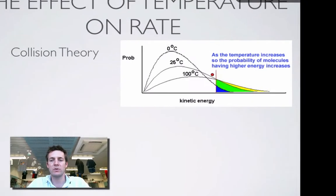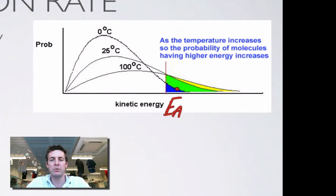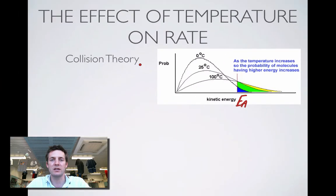Let's look at one of these energy distribution diagrams to try and help us explain this. As the temperature of a sample increases, the proportion of particles with greater than a certain amount of energy — so let's say this is the activation energy — increases as the temperature increases, and so a greater proportion of collisions will lead to reactions. So collision theory tells us that the rate of all reactions will increase as the temperature increases, and the rate of all chemical reactions will decrease when temperature decreases.